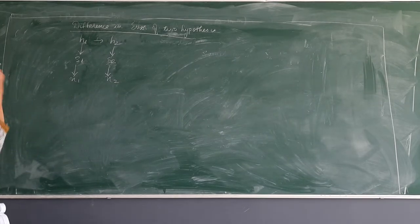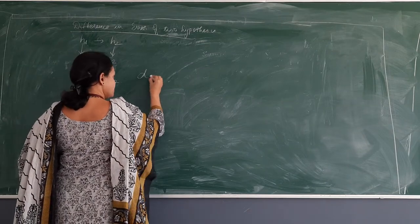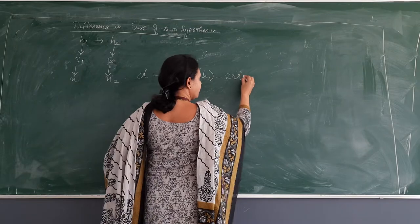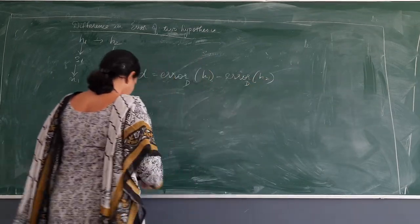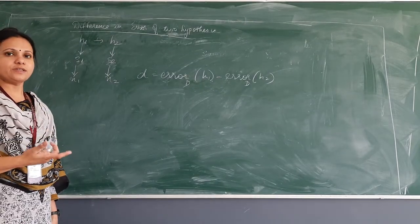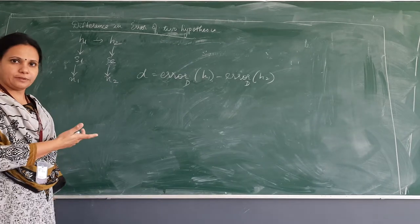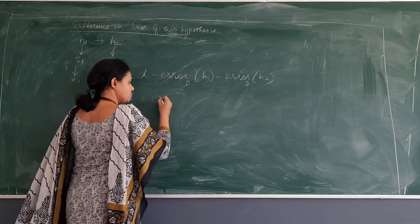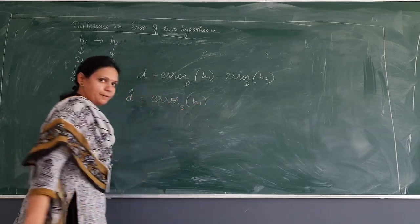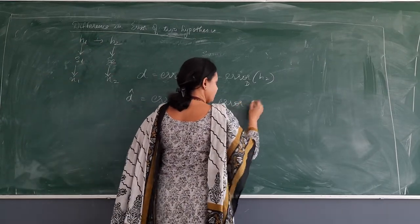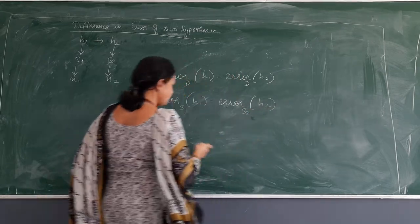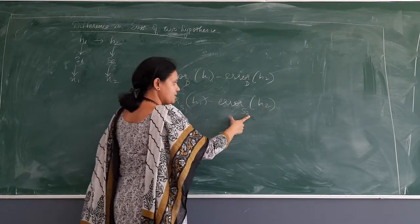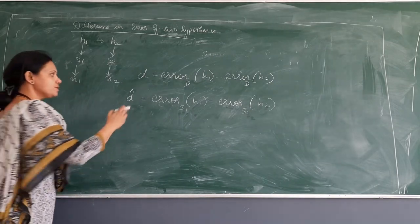Now since it is taken from a distribution, I can say that the difference in the error between two hypotheses can be defined as error of H1 with respect to the distribution minus error of H2 with respect to the distribution. Now the estimator B-cap is a sample from this distribution, so it will be equal to error of H1 from sample S1 minus error of H2 from sample S2. The difference between the two will be the error of the distribution — this is my estimator.